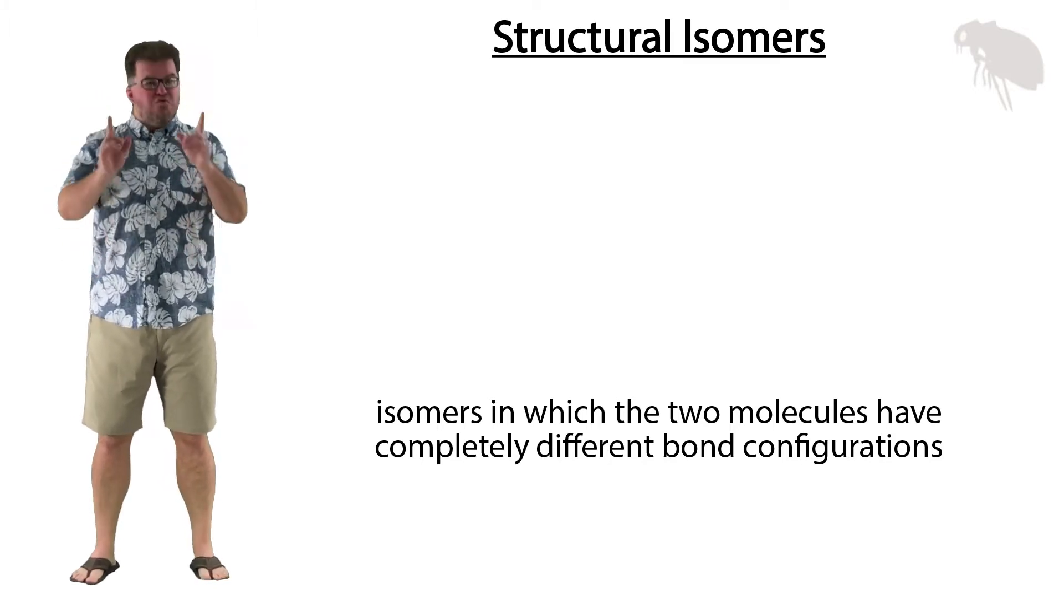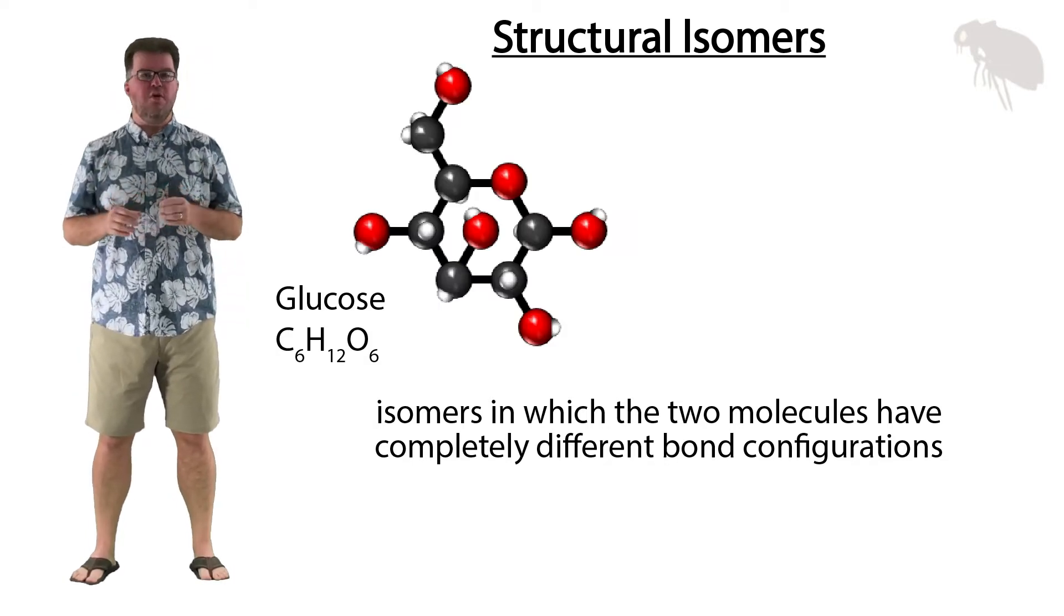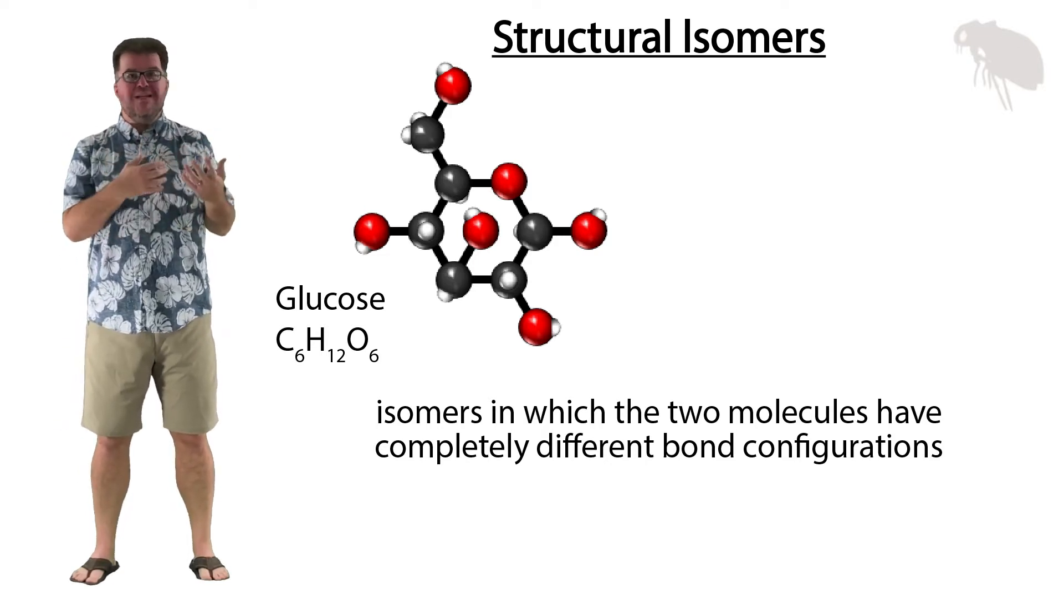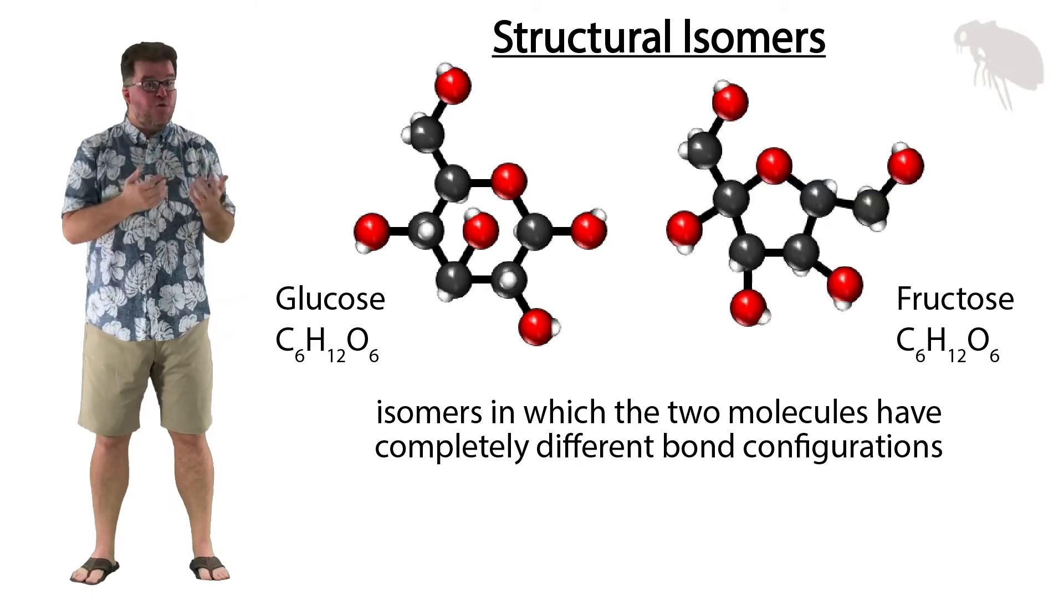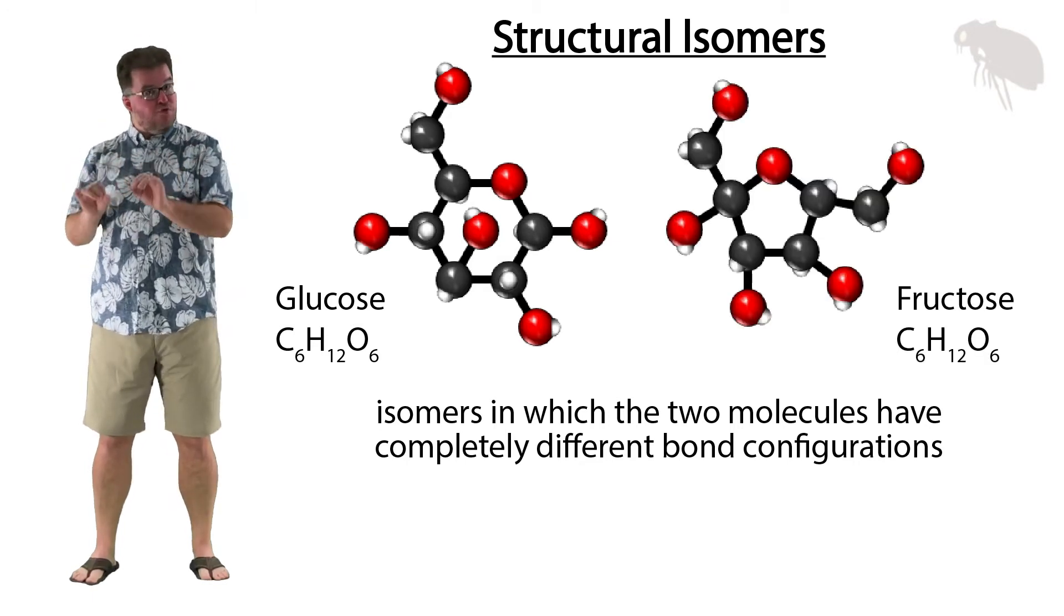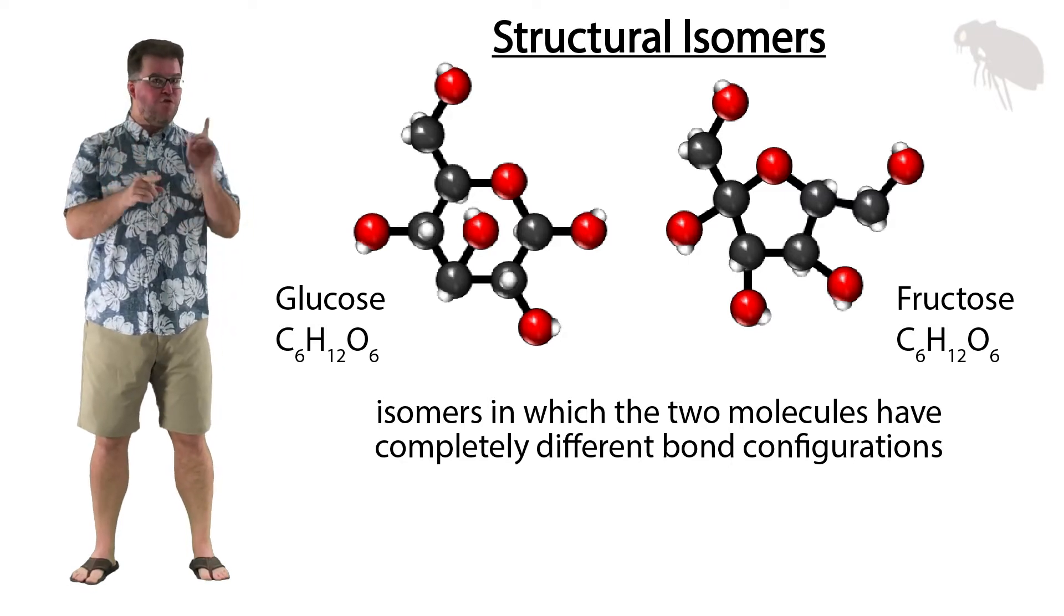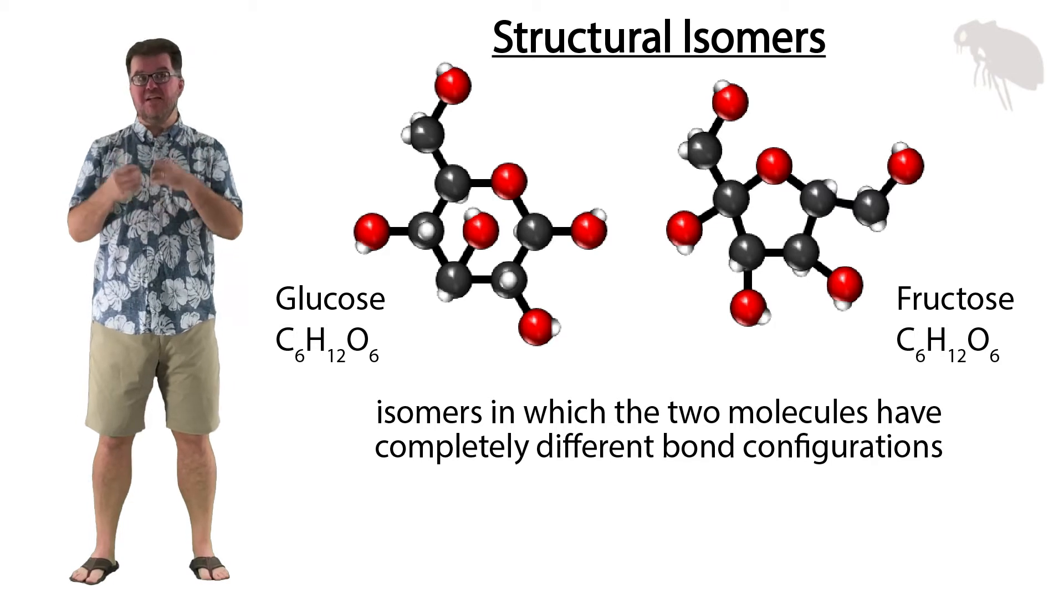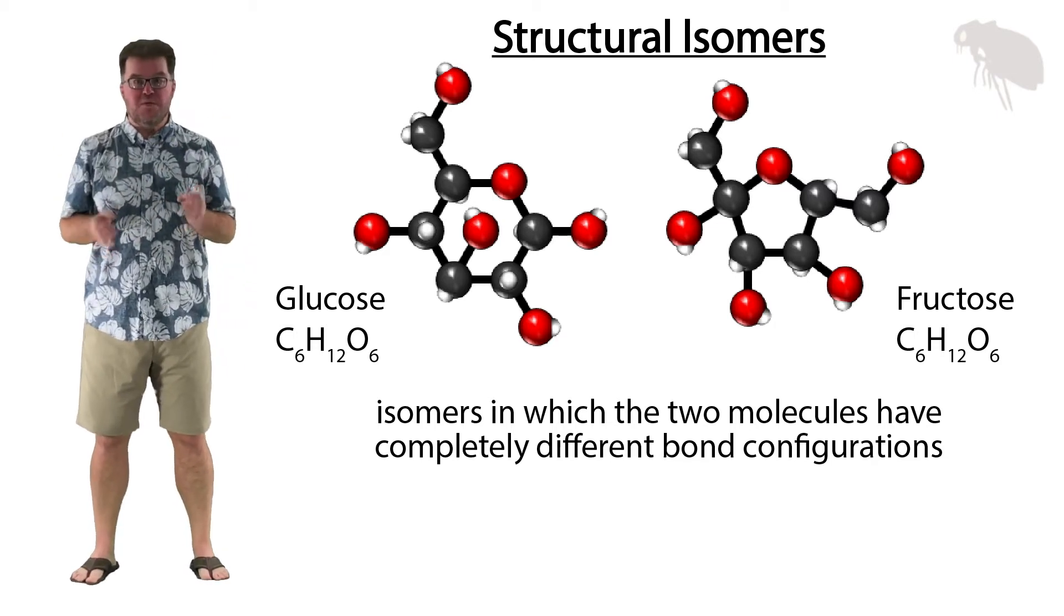The parts are put together in completely different bond sequences, so they're just obviously completely different molecules. For example, here's glucose. Glucose is a monosaccharide sugar with the formula C6H12O6, and here we can see it forms a hexagonal ring. Next to it is fructose, also chemical formula C6H12O6, but unlike glucose, fructose has a pentagonal ring structure.